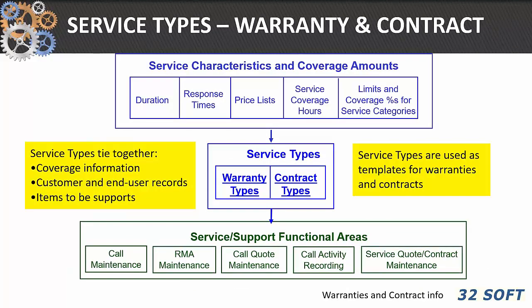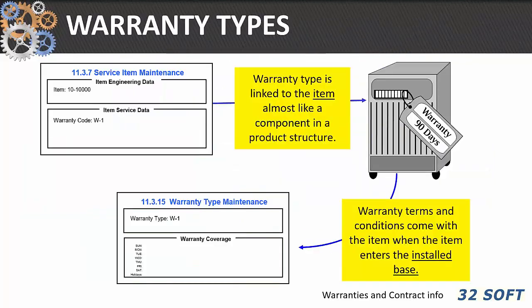Today we're going to talk about the service types — warranties and contracts. We'll talk about the characteristics of warranties and contracts, how you set up warranty types, how you use contract types. These service types tie together all of the coverage information, how you treat and set up end user and customer records, items that are to be supported. They basically hit just about everything in service and support, so they're foundational to the way we deal with the service and support module.